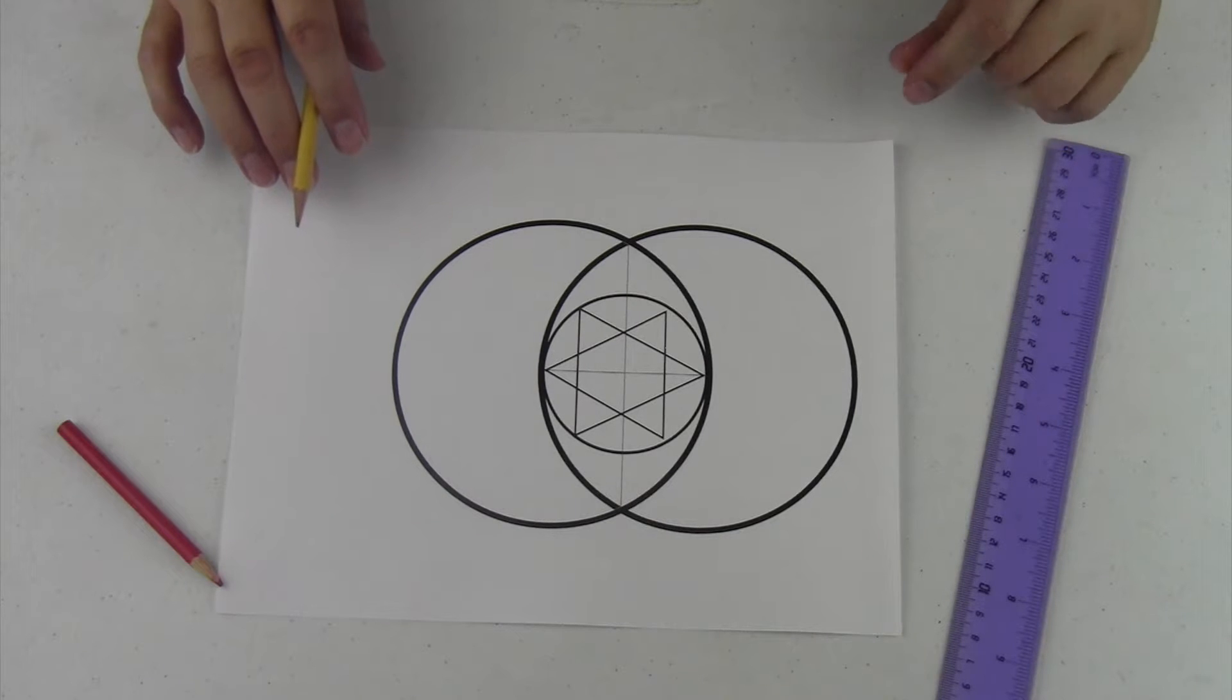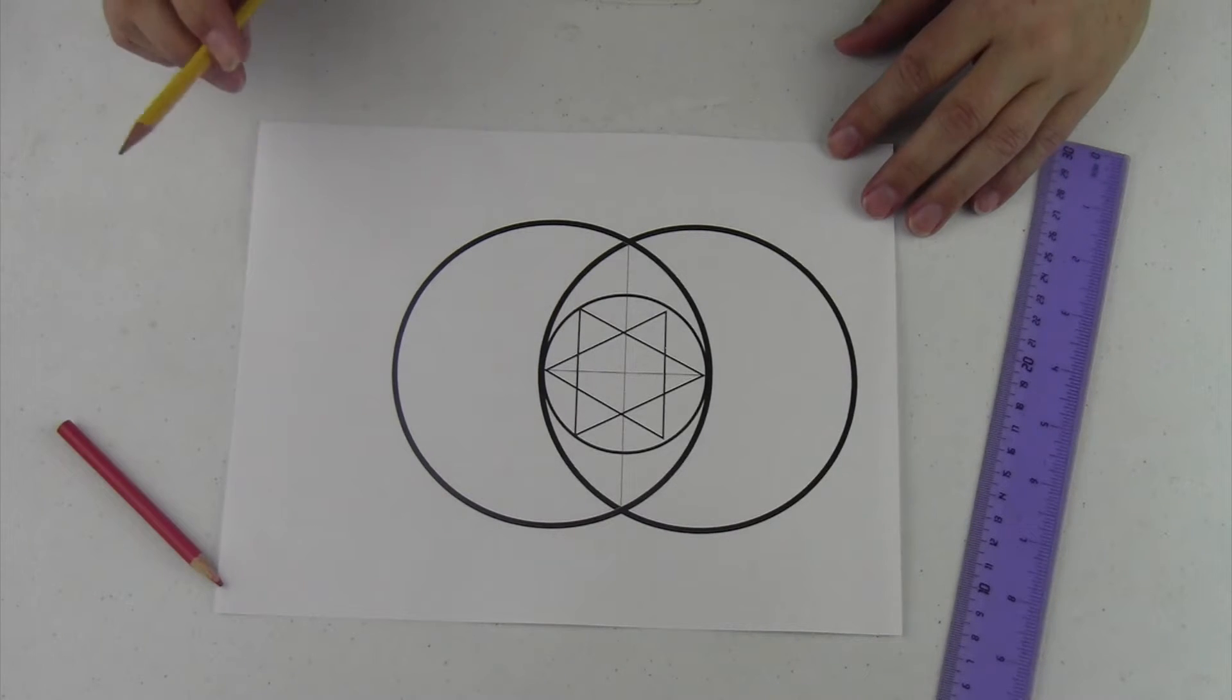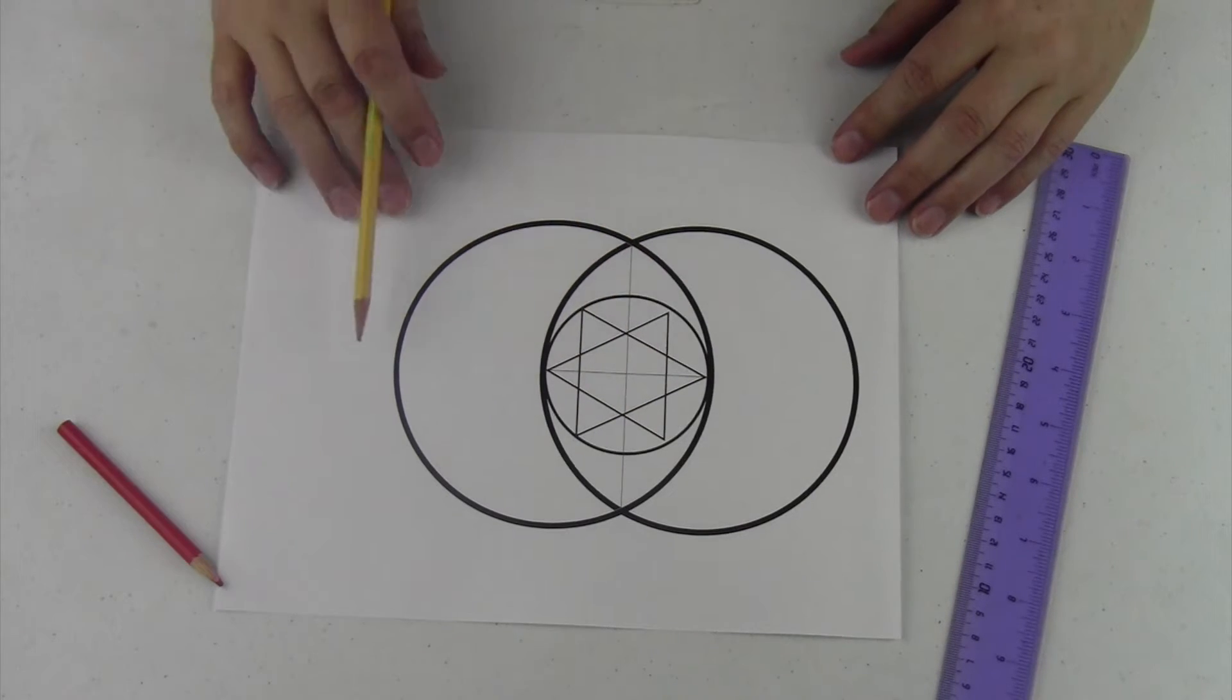How to create the nonagon. A nonagon is a nine-sided polygon and you want to get as close to nine sides as possible.